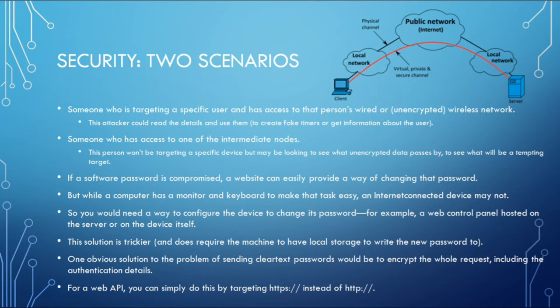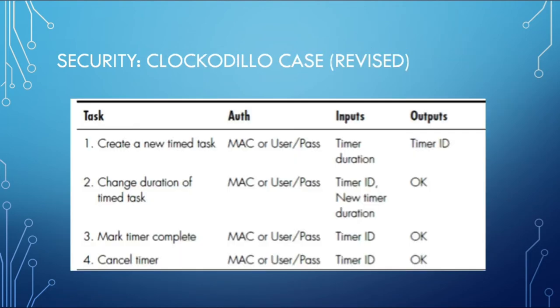There are two main security cases to consider. The first is someone targeting a specific user who has access to that person's wired or wireless network — this attacker could read details and use them maliciously. The second is someone who has access to one of the intermediate nodes, who may not target a specific device but looks for unencrypted data passing by to find a tempting target. One solution is to encrypt the whole request including authentication details. The revised Clockodillo API table includes additional authentication such as MAC address, username, and password.